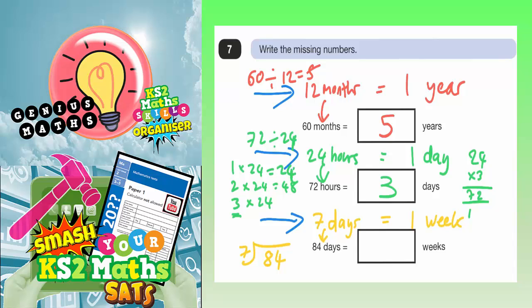So 7s into 8 goes once with one left over. So you carry the 1 to now make 14. And 7s into 14 goes twice. So 7s into 84 goes 12 times. So how many lots of 7 days go into 84 days? That's 12 lots. And remember, every lot of 7 days is a week. So 12 lots of 7 days would be 12 weeks.